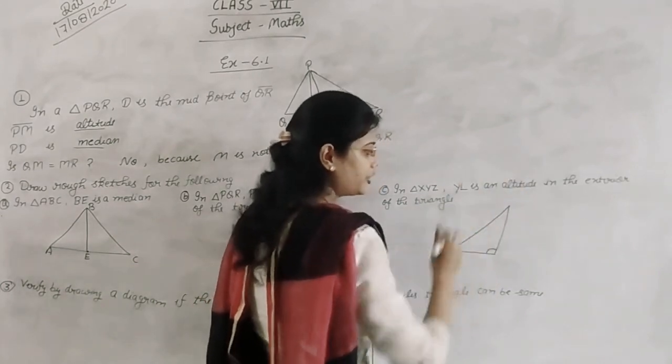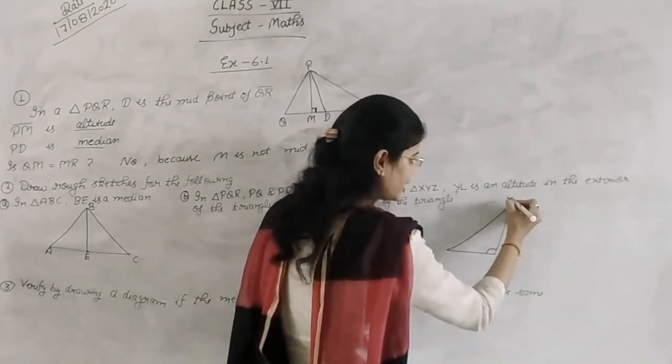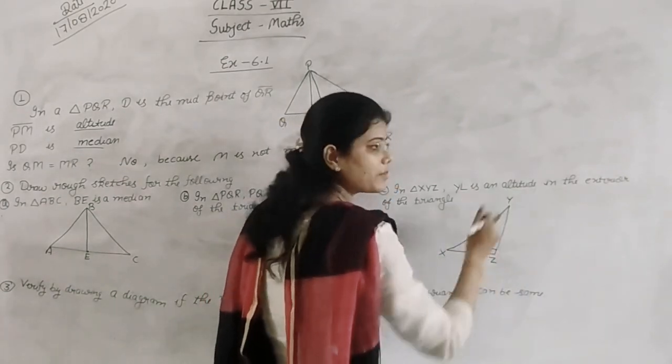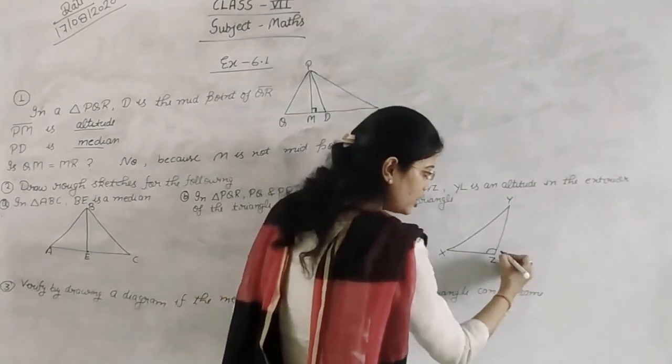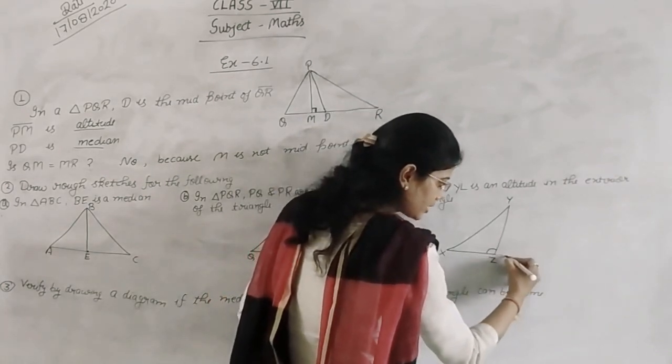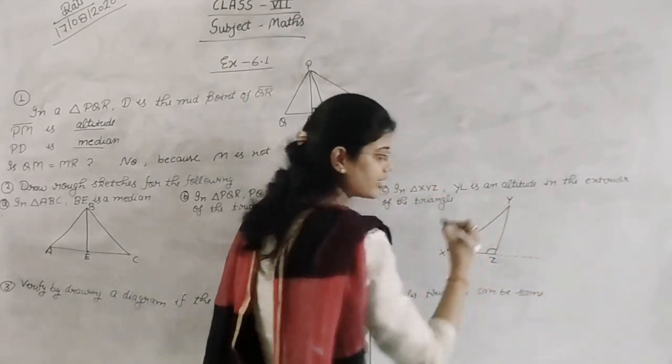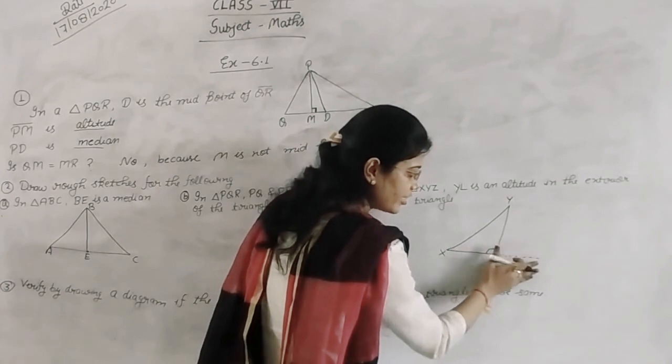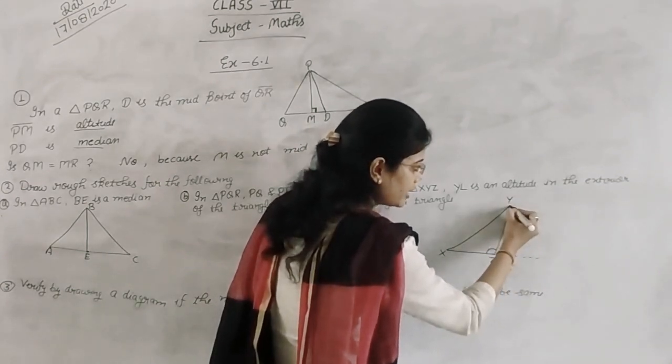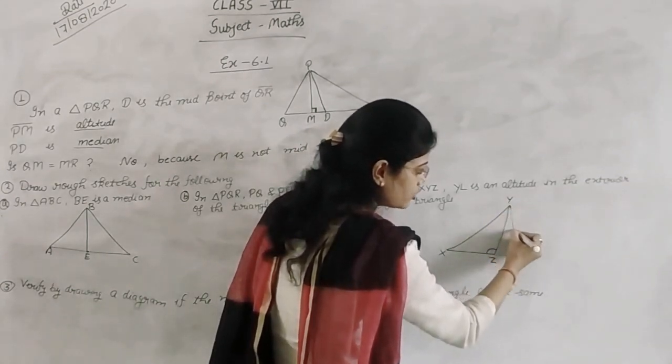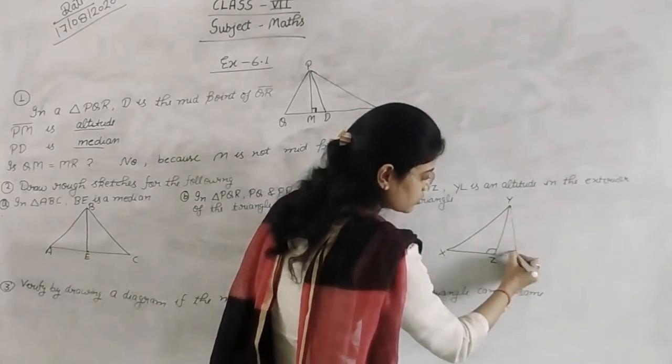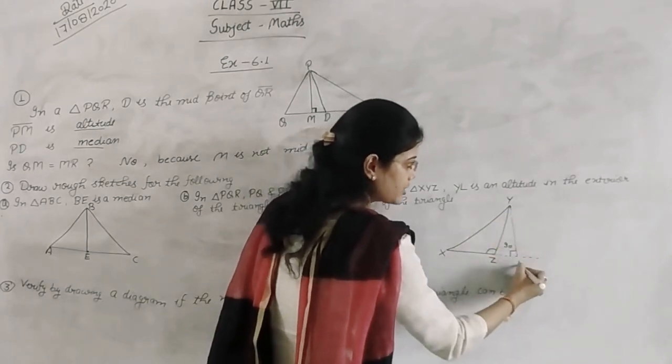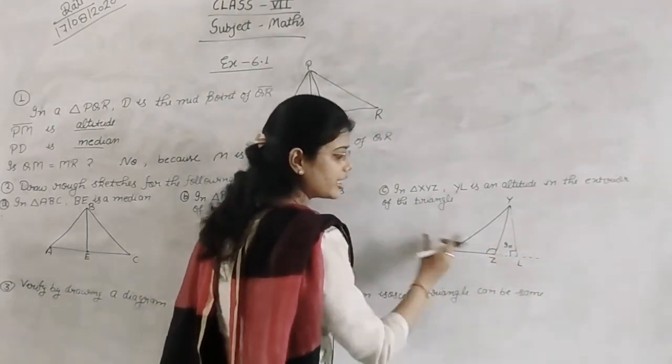YL is an altitude. Y, X, Y, J. YL is an altitude. If you are standing in the right direction, you use the right direction. Then turn it up to 90 degrees. So this can go to 90 degrees, by any of the altitude in the exterior of the triangle.